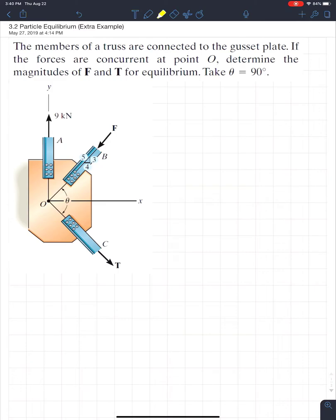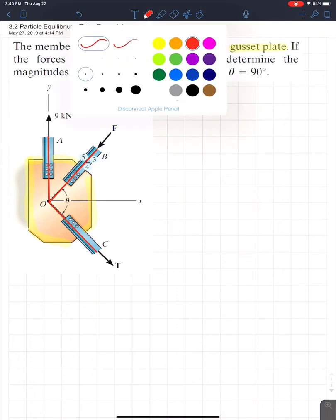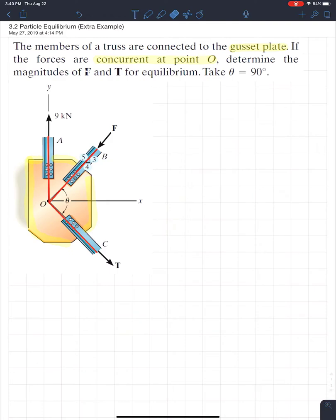Looking at this example, it says the members of a truss are connected to the gusset plate. If you guys don't know what a gusset plate is, it's basically this plate here. You see them a lot in structural engineering. It says if the forces are concurrent at point O, determine the magnitudes of F and T for equilibrium. Take theta equal to 90 degrees.